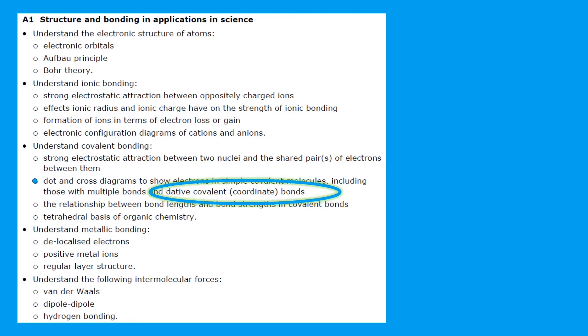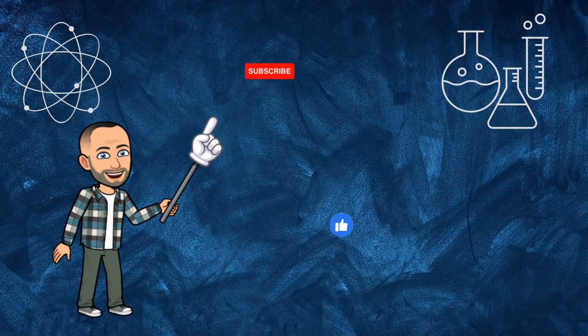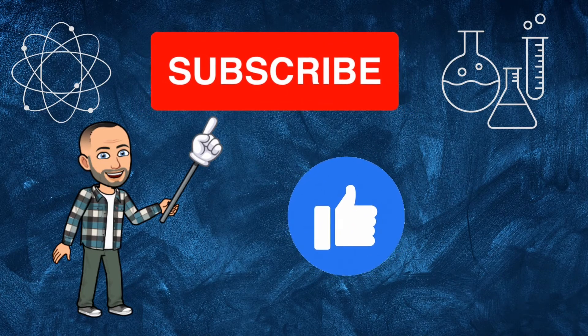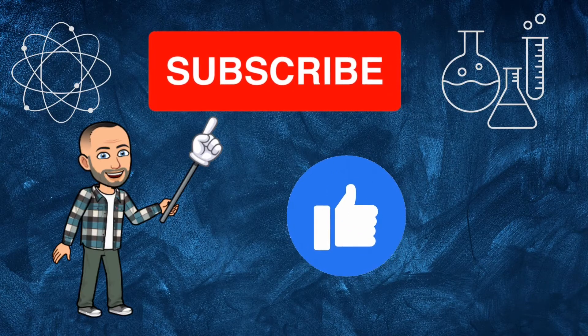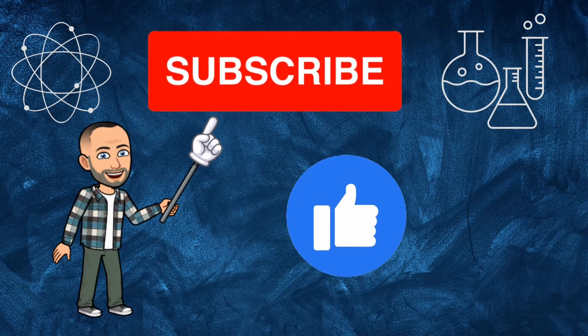We're going to start off by defining a dative covalent bond, sometimes called a coordinate bond—same thing—and then we're going to look at some dot and cross diagrams. First up though, if you don't already subscribe, what are you waiting for? Your support is very much appreciated, so please make sure you use the like and comments feature to let me know what you think.